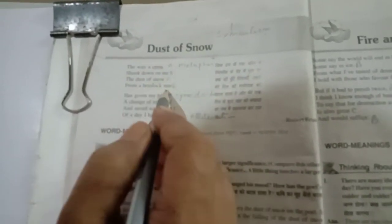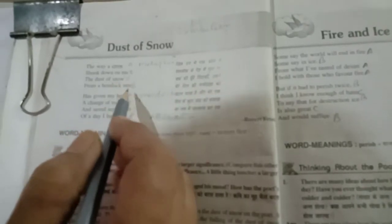And on the poet fall down the dust of snow from a hemlock tree. The poet has given my heart. This fall down of dust particles on the poet has given his heart and his mood a change. The poet was, as we come to know already, that the poet was very sad at that time. But this dust of snow while it fell on the poet has given a change of mood to the poet, and the poet became sad to happy.